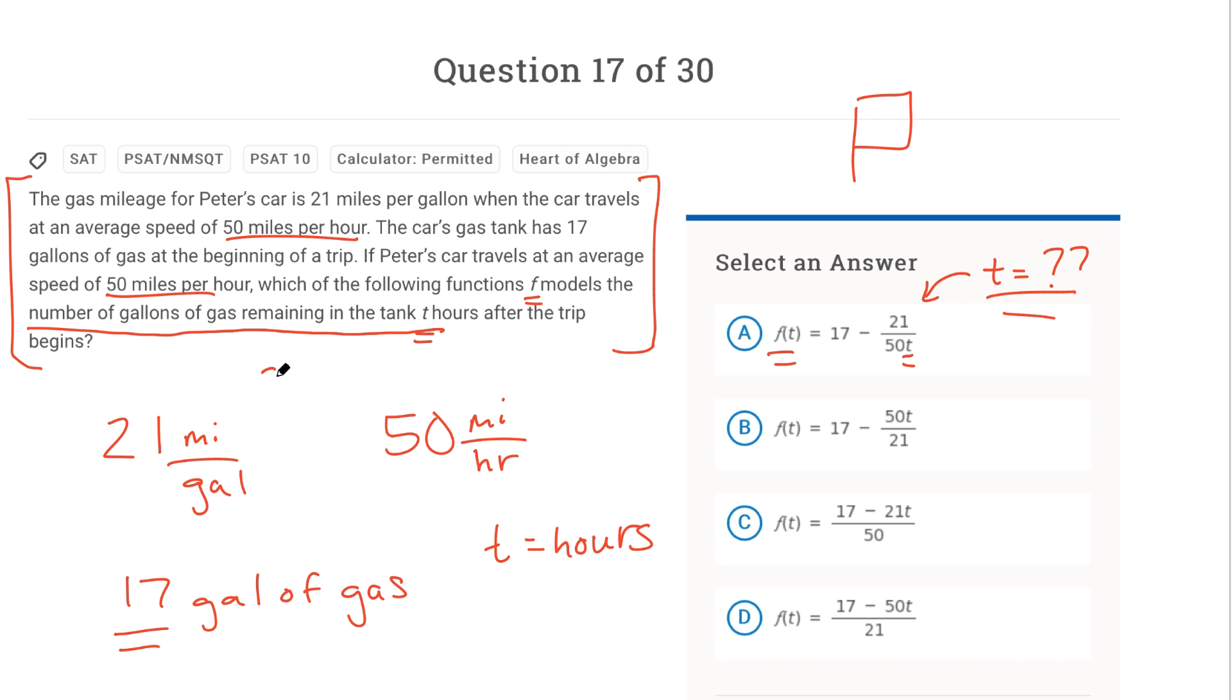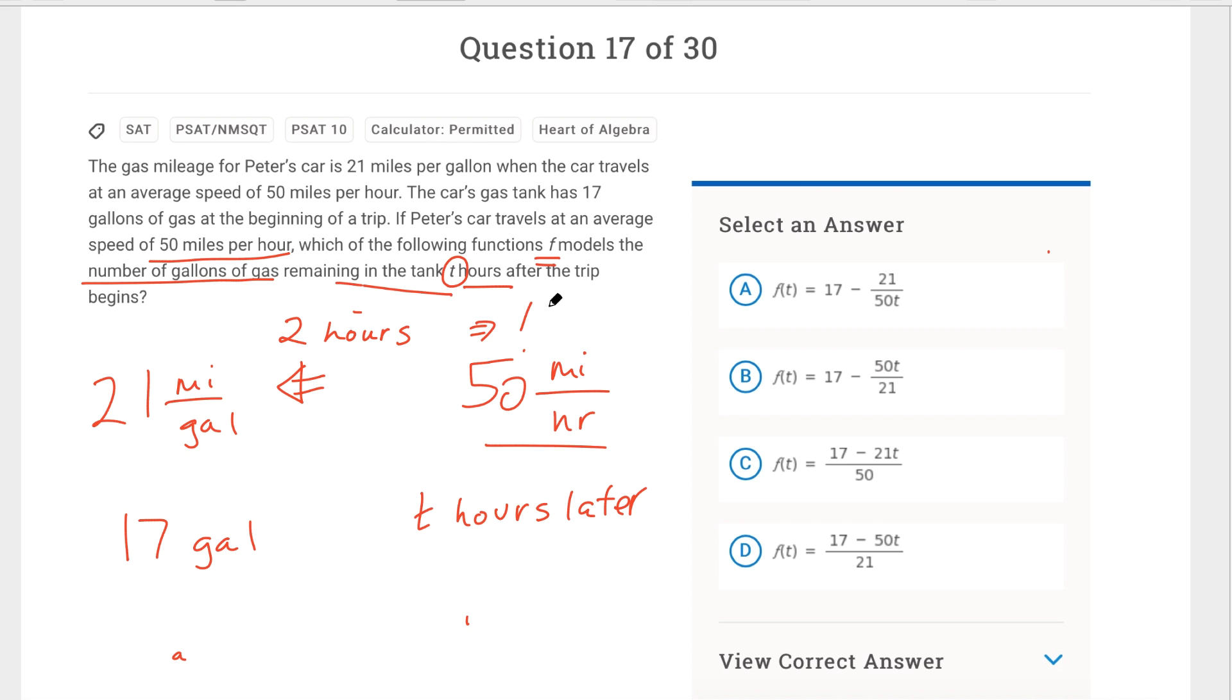If his car travels an average of 50 miles an hour, which of the following functions models the number of gallons of gas remaining in the tank t? So what I'm going to do is I'm going to make up a t. I'm going to pretend that Peter drives for let's say two hours. And then I'm going to manually calculate all this stuff out. FYI, I don't like to make up one when I'm making up numbers and I have variables in the answer choice, because one disappears really easily and sometimes that disappearing act means that more than one answer choice is right. So I'm going to make up two. If he goes for two hours and he's going 50 miles an hour, that means he's going to go 100 miles. And if he drives for 100 miles, then I'm going to figure out how much gas did he use.